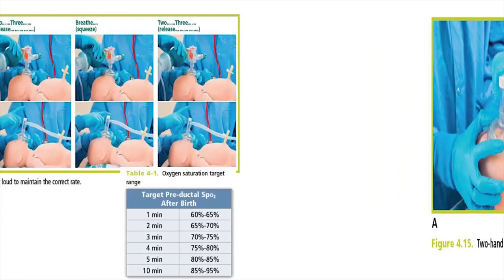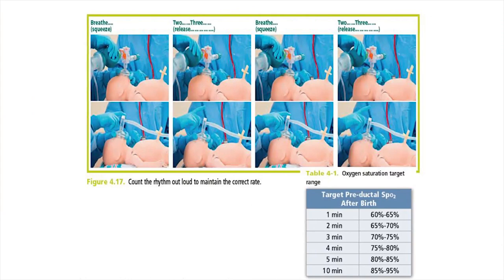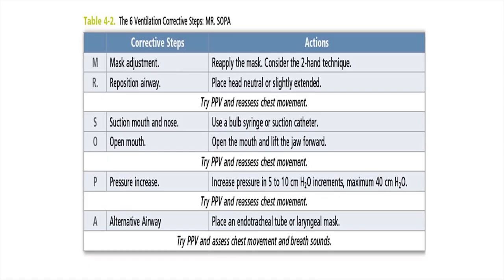The sequence for positive pressure ventilation is 40–60 breaths per minute: breathe 2-3, breathe 2-3, breathe 2-3, etc. Count out loud to maintain the correct rate. Always target the oxygen saturation and adjust FiO2 according to SpO2. If after 15 seconds of initial ventilation there is no increase in heart rate or no adequate chest rise, follow the MR SOPA sequence.